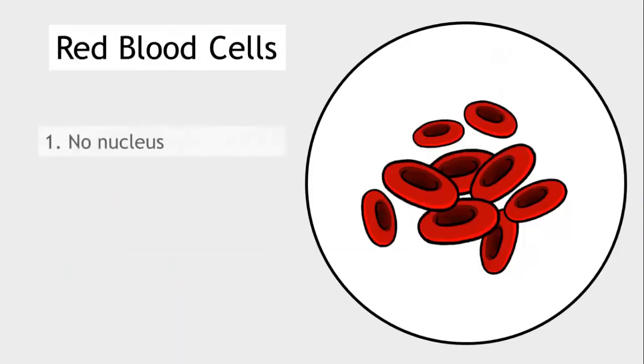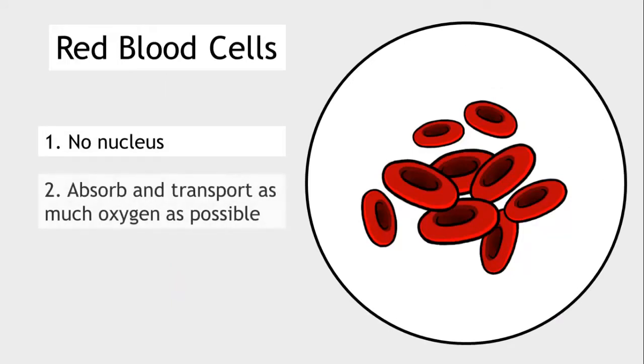Red blood cells do not possess a nucleus. This is so that they have enough space to be able to absorb and transport as much oxygen as possible.